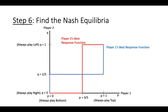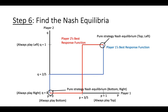We now have a way to find all of the Nash Equilibria of this game. They are the three points where the players' best response functions intersect. Two of them are the pure strategy Nash Equilibria of top left and bottom right that we have found previously. The third point of intersection is the mixed strategy Nash Equilibrium: it occurs when player 1 plays top with probability 3 fifths and player 2 plays left with probability 2 fifths.